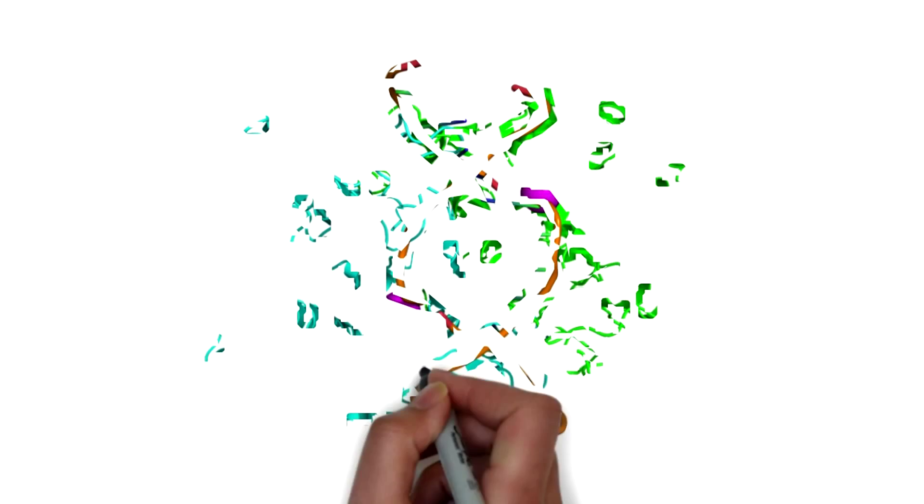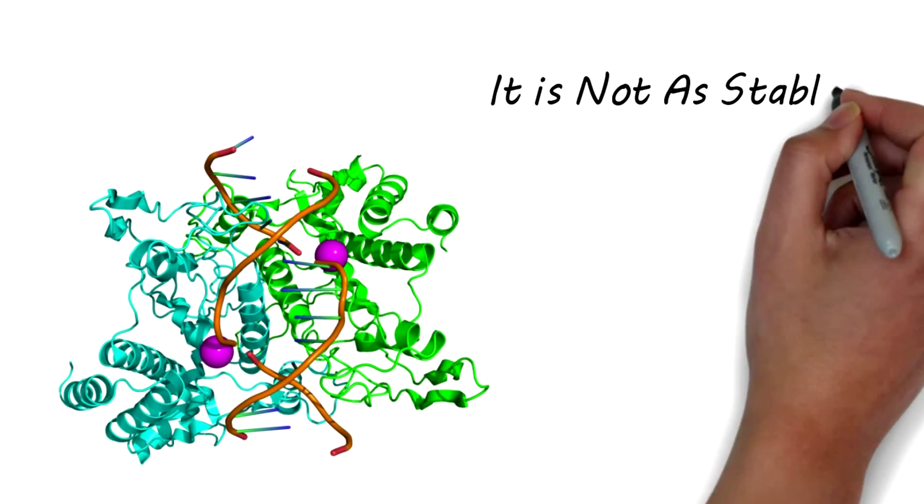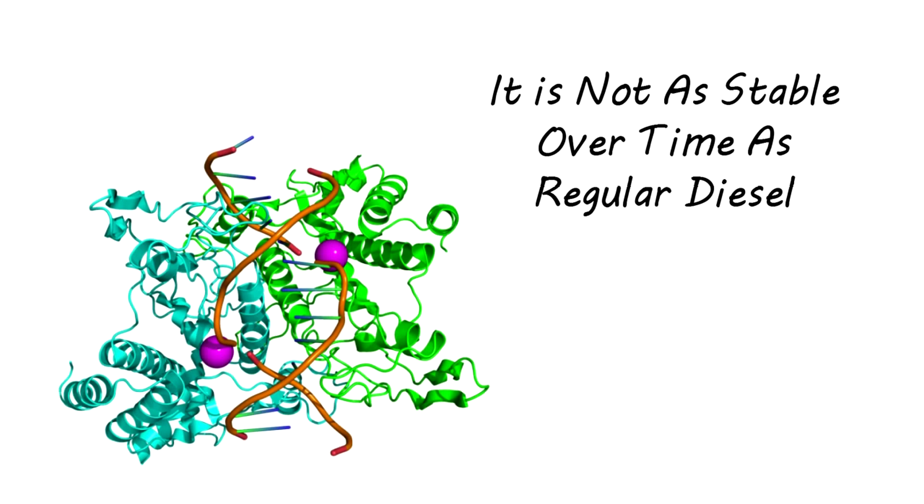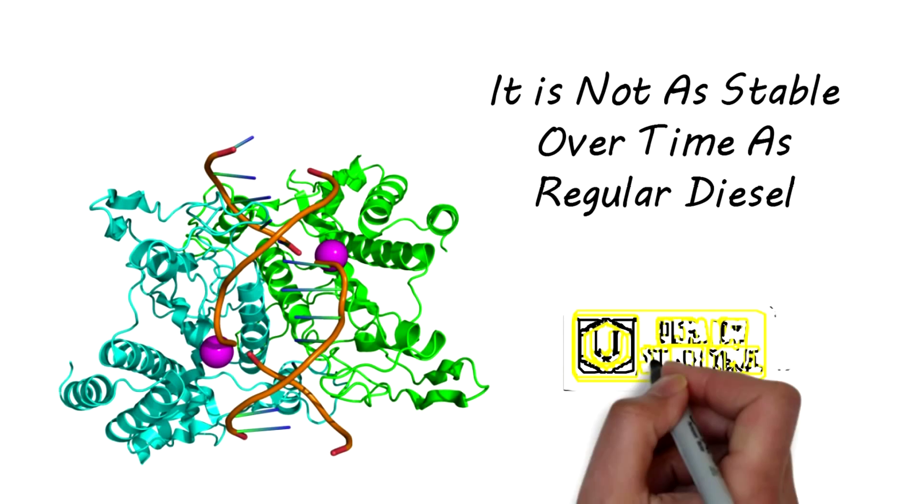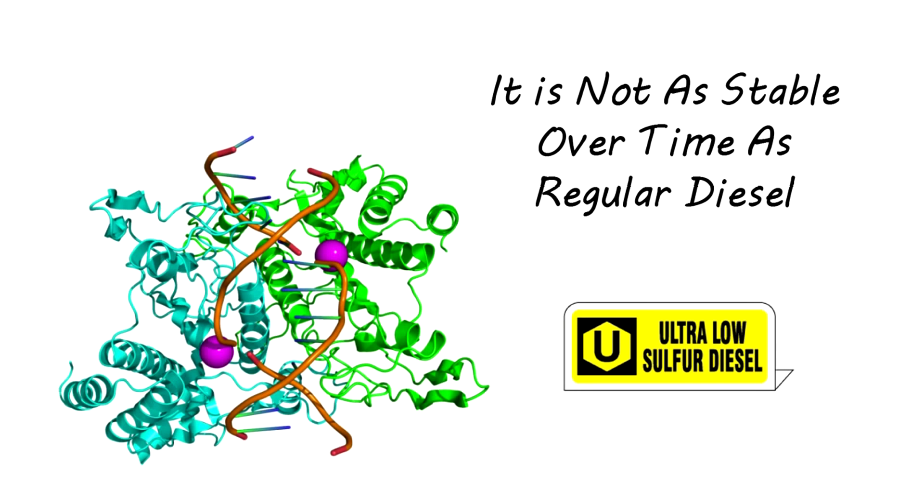Because biodiesel is made from chemically converted fats and oils, it is not as stable over time as regular diesel is, even less stable than the ultra-low sulfur diesel that forms sludge more easily itself.